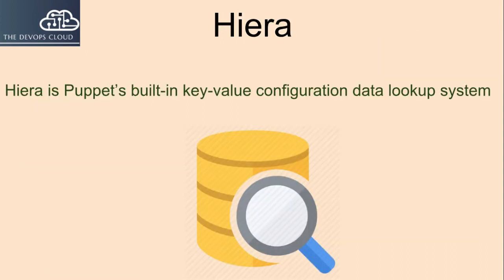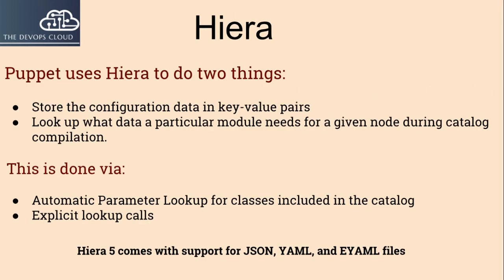With Hiera, you can externalize your system's configuration data. Puppet uses Hiera to do two things: store the configuration data in key-value pairs, and look up what data a particular module needs for a given node during catalog compilation. This is done via automatic parameter lookup for classes included in the catalog, and explicit lookup calls.